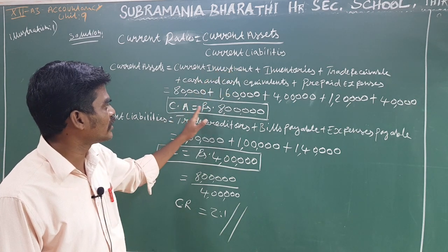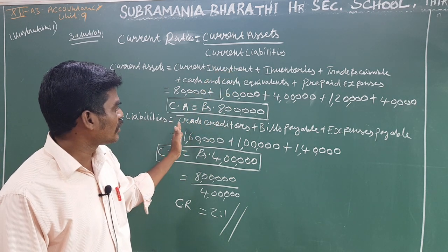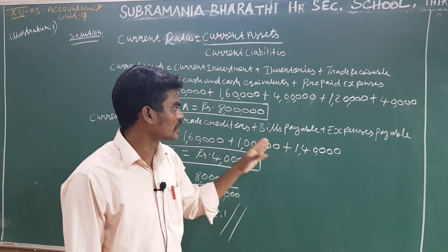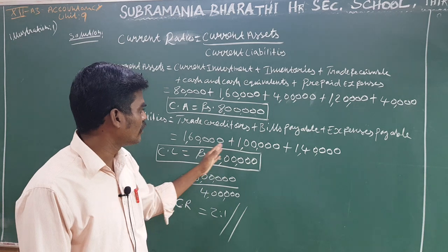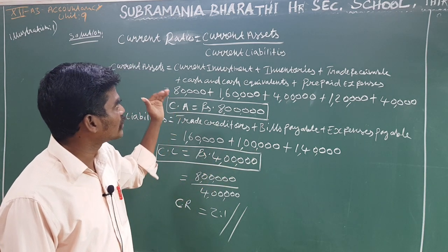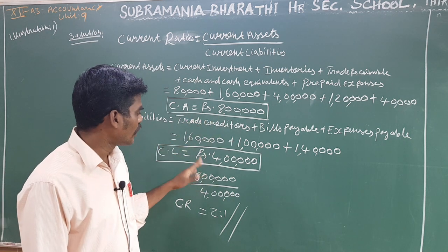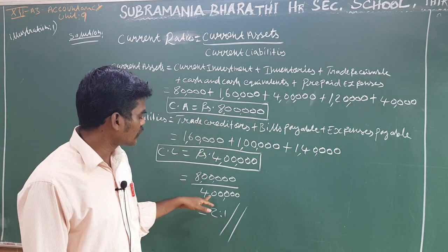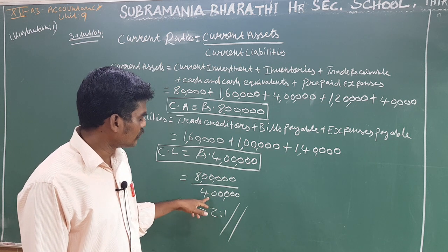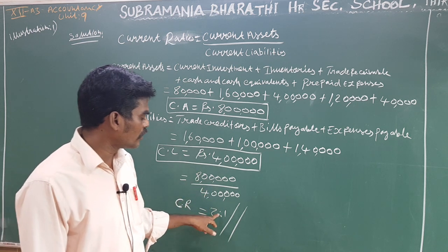Total current assets is 8 lakhs. Current liabilities consist of creditors, bills payable, and expenses payable, totaling 4 lakhs. So current assets of 8 lakhs divided by current liabilities of 4 lakhs gives 2:1.